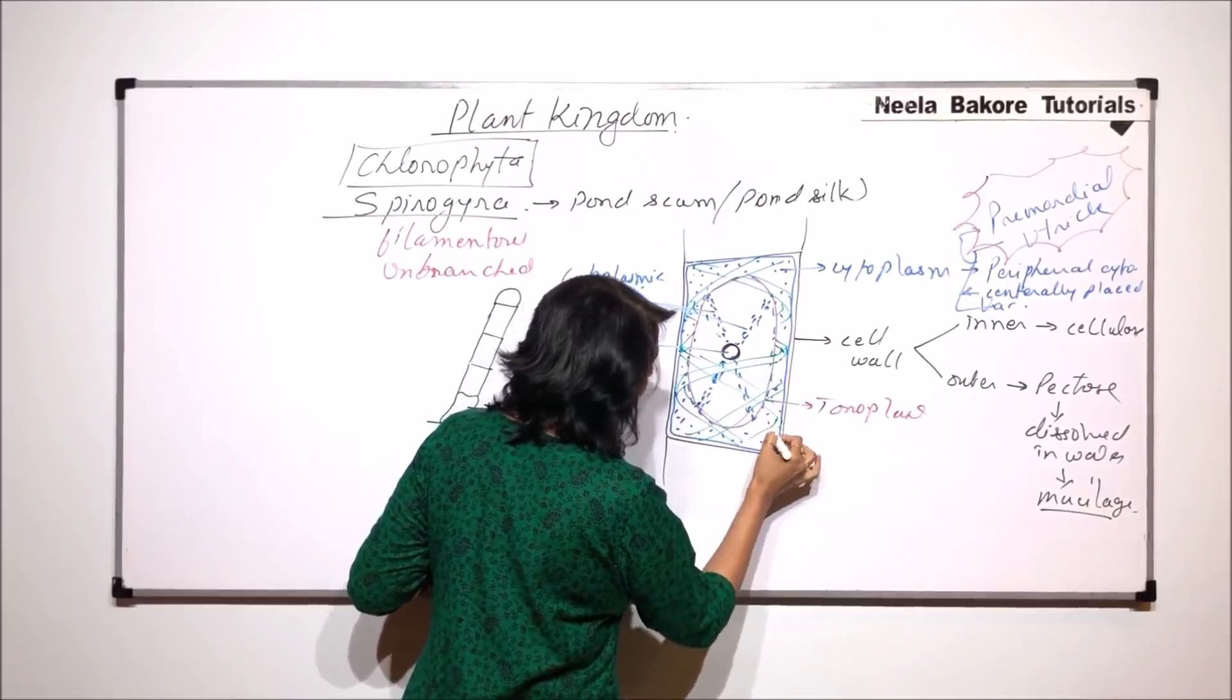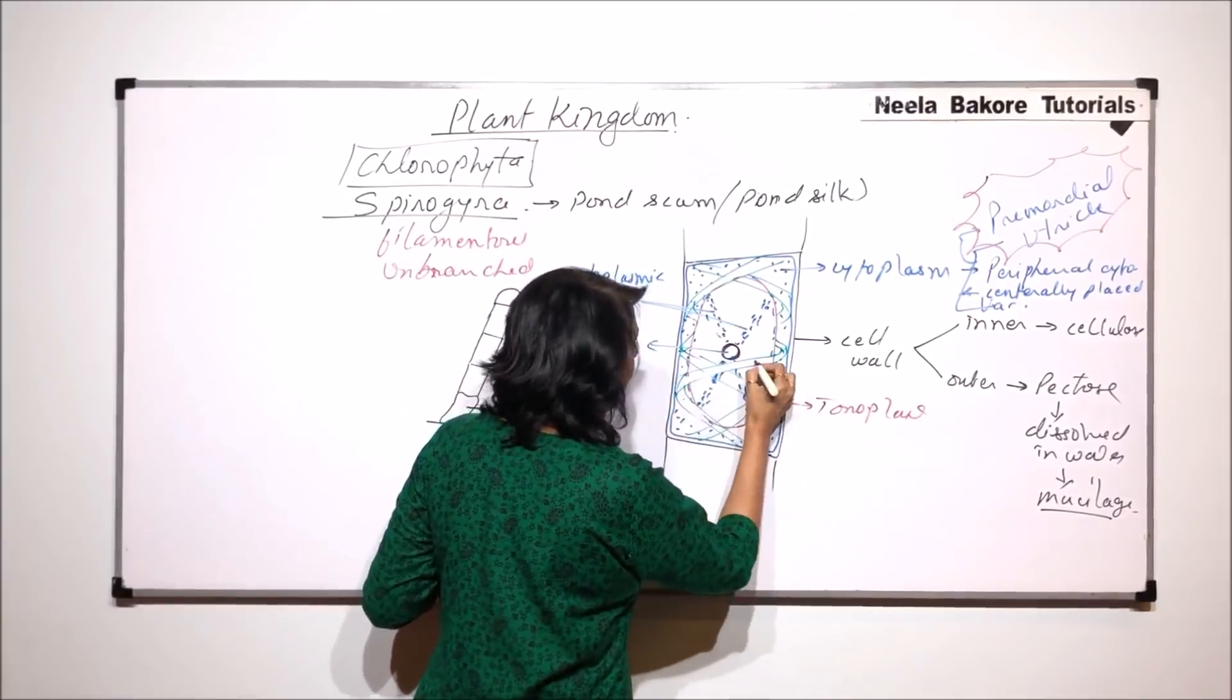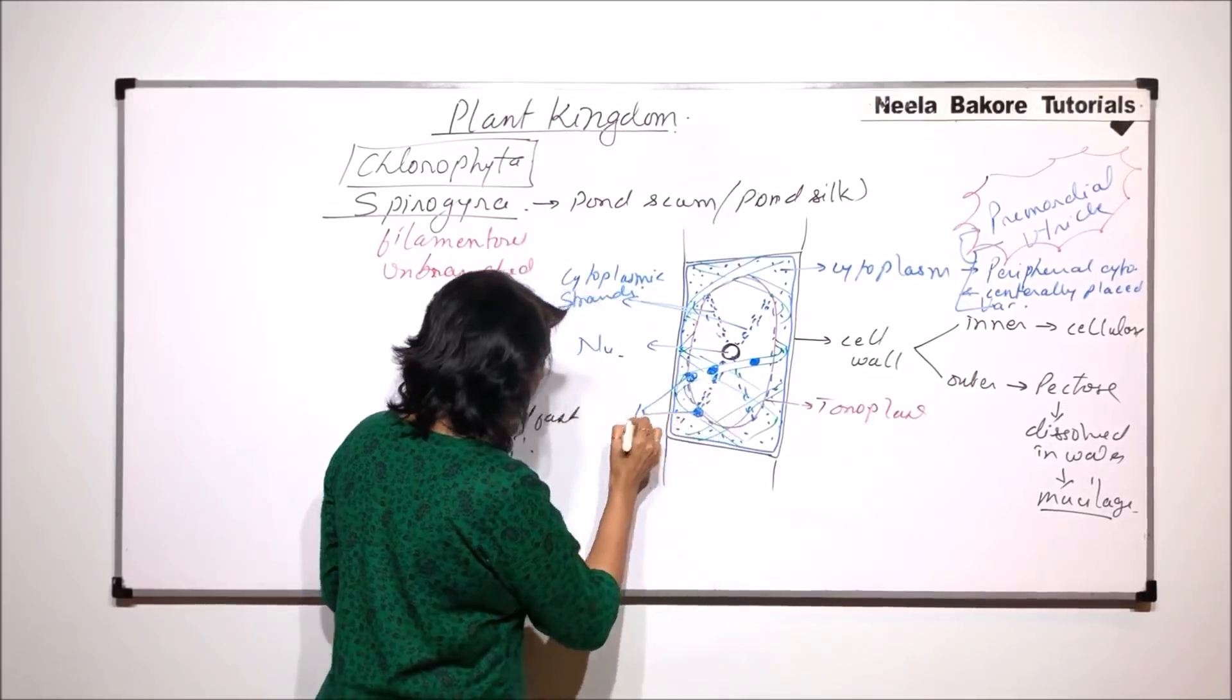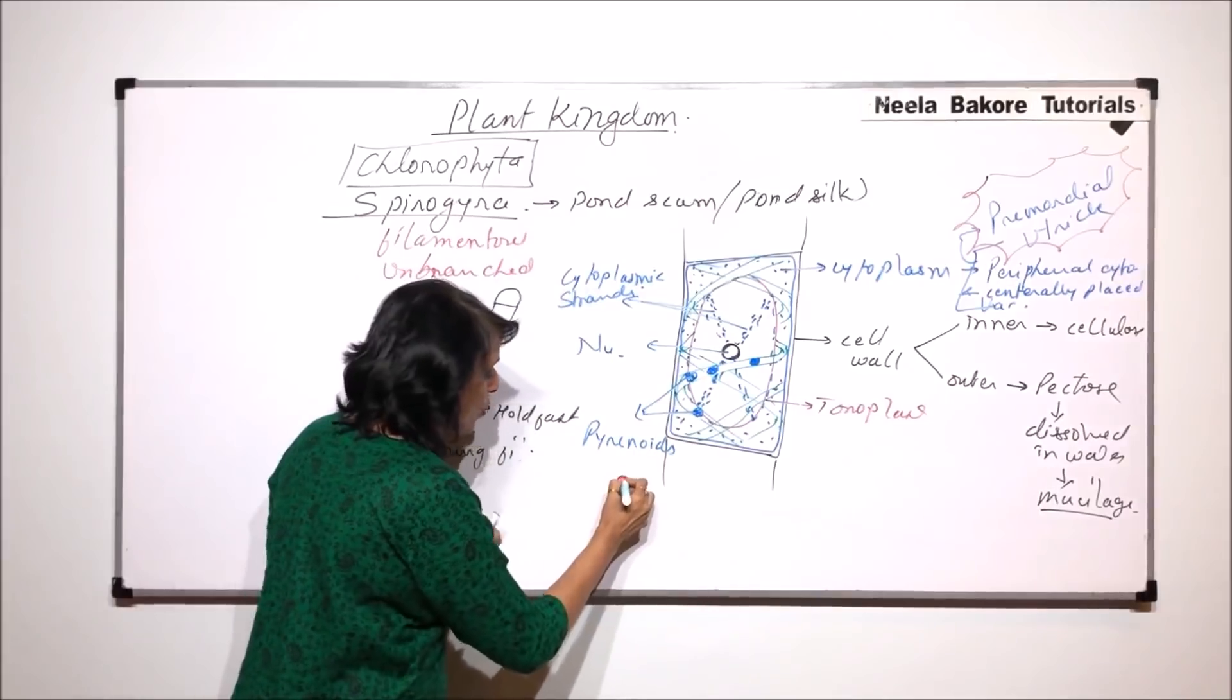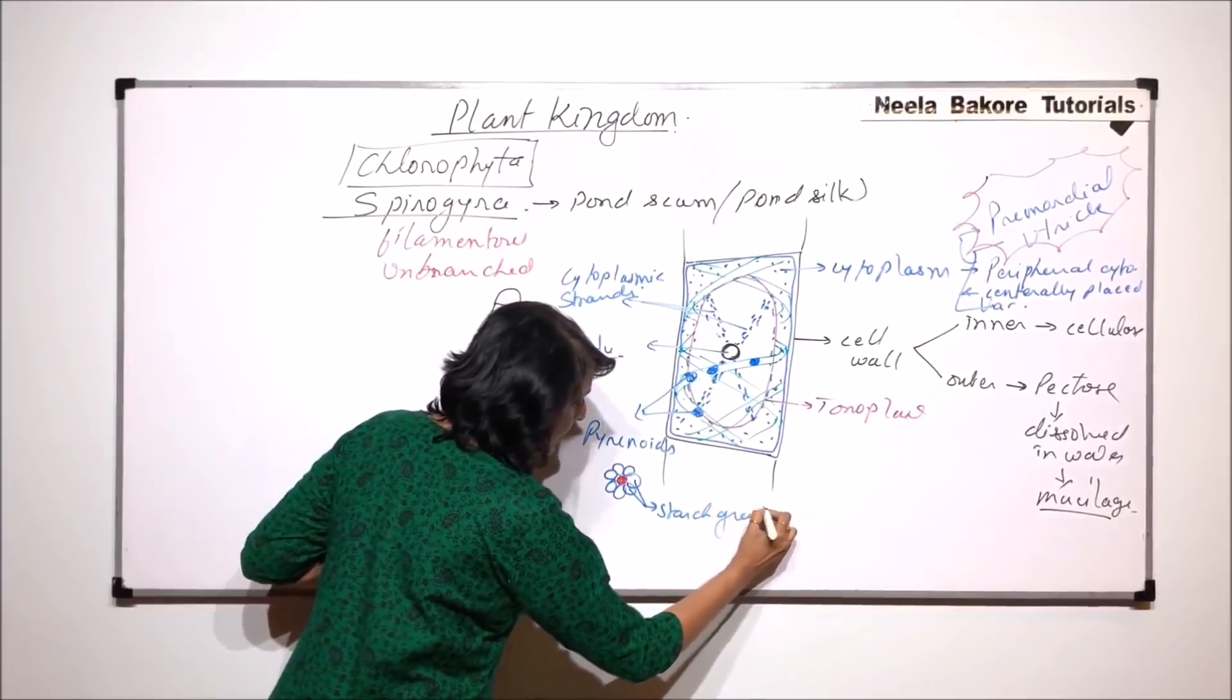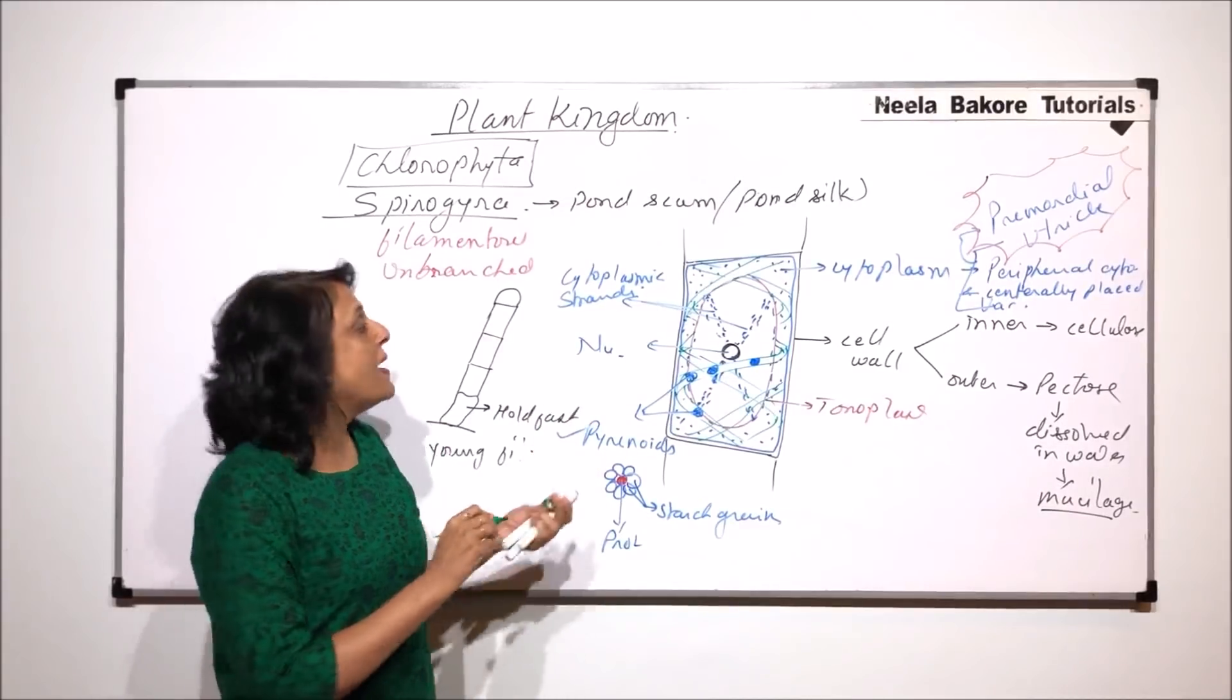We have also seen that on the chloroplasts are present pyrenoids. Let us erase these things and draw a few pyrenoids. Pyrenoid is nothing but the same thing which is going to have a central core of protein surrounded by the starch grains. If you are able to recall, pyrenoids are the reserved food material. The central core is of protein and it is surrounded by starch grains. The structure is known as pyrenoid.